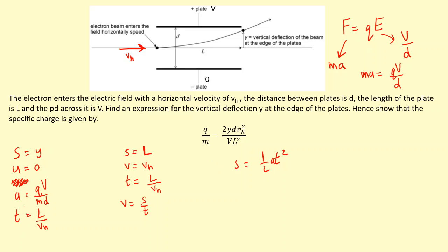So we have y is equal to half times qV over md times L over vh squared. If we expand this, we get half qV over md, L over vh squared, squared.